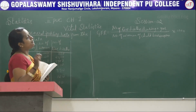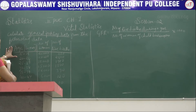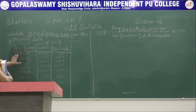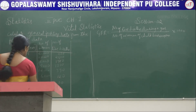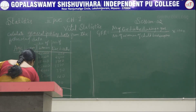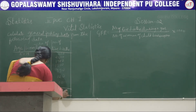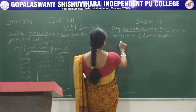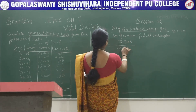We need the number of births and the number of women of childbearing age. In this data, the age group given is 15 to 49, which is the childbearing age of women. The number of women and number of live births are both provided. Taking the totals: number of women is 1,00,000 and live births is 7,200. Substituting: 7,200 divided by 1,00,000.